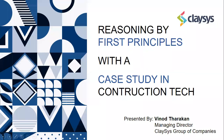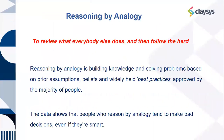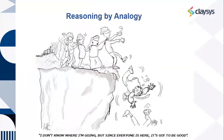This is a brief presentation on reasoning by first principles with a case study in the construction industry. A first principle is a basic assumption that cannot be deduced any further, while reasoning by analogy is to review what everybody else does and then follow the herd. A lot of folks reason by analogy and then wonder why they didn't get positive results even though they followed exactly what others had done.